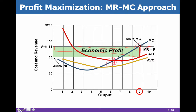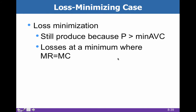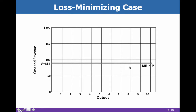The question is what happens when the price is lower — what do we do? We consider loss minimization. We want to produce where marginal revenue equals marginal cost to maximize profit, and likewise to minimize our losses. We always produce at MR equals MC no matter what. Even if we're not going to make a profit, as long as price is greater than minimum average variable cost, we'll still produce.